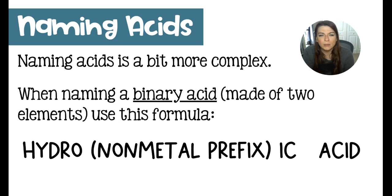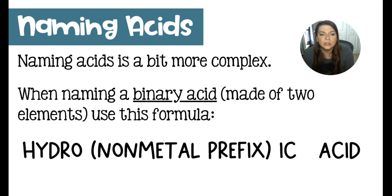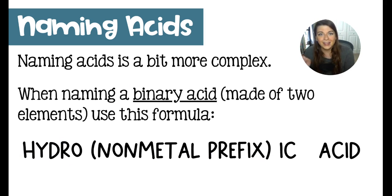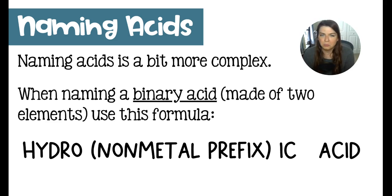Now naming acids is a bit more complex, but it's not so bad. This naming focuses on the anion in the compound. When we're naming a binary acid made of just two elements, you'd have the anion like fluoride, sulfide, or chloride. You're going to use this formula: put 'hydro' in front, have the non-metal prefix, stick an '-ic' on the end, and then call it an acid. So that would be something like hydrochloric acid for HCl. HF would be hydrofluoric acid. Pretty simple.